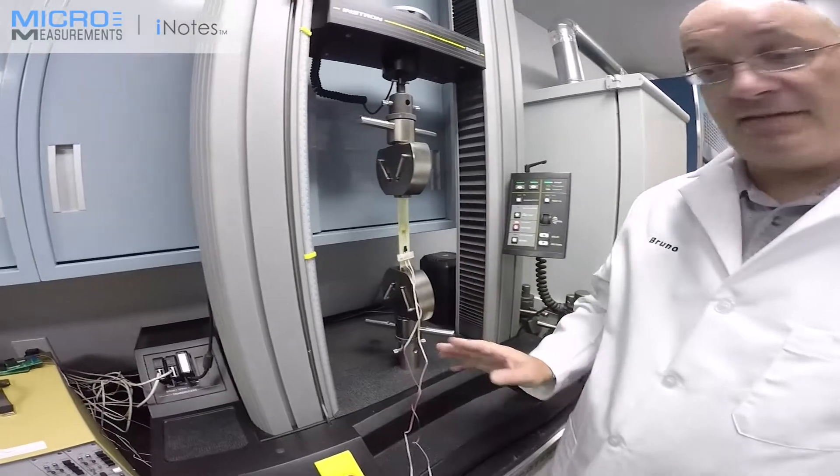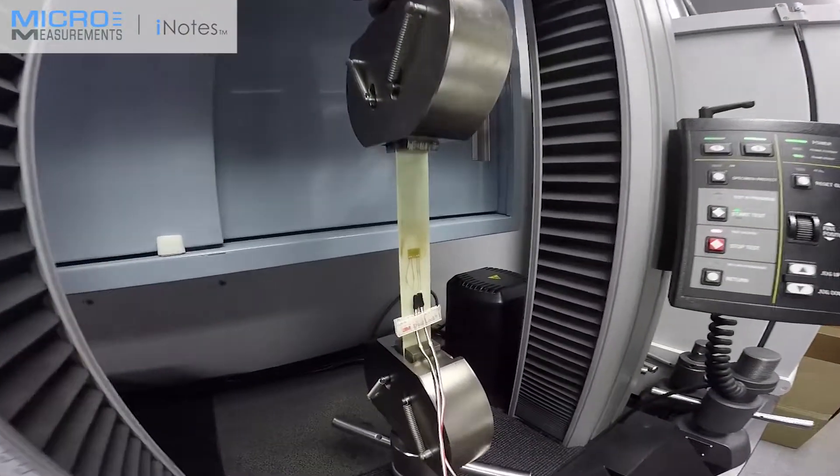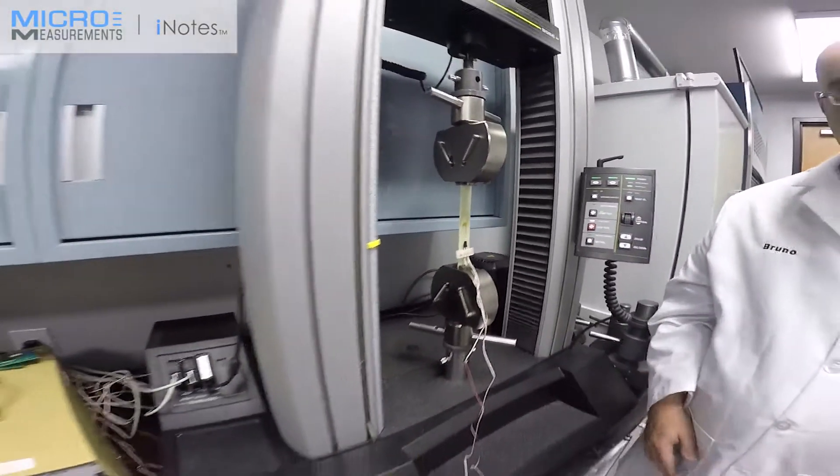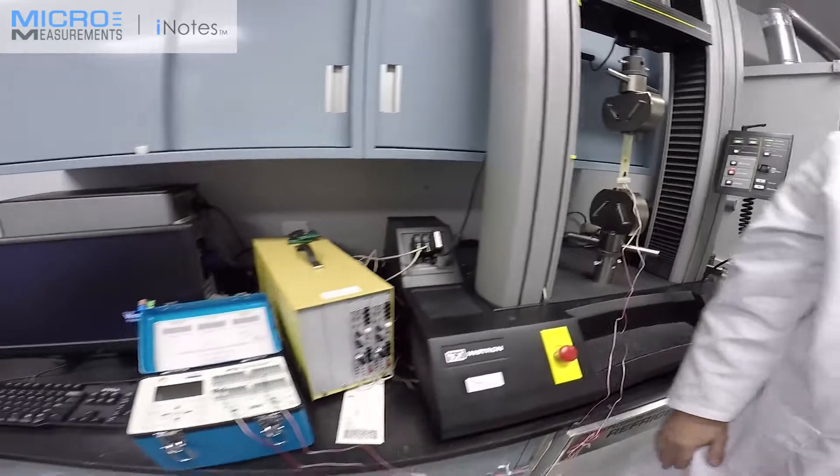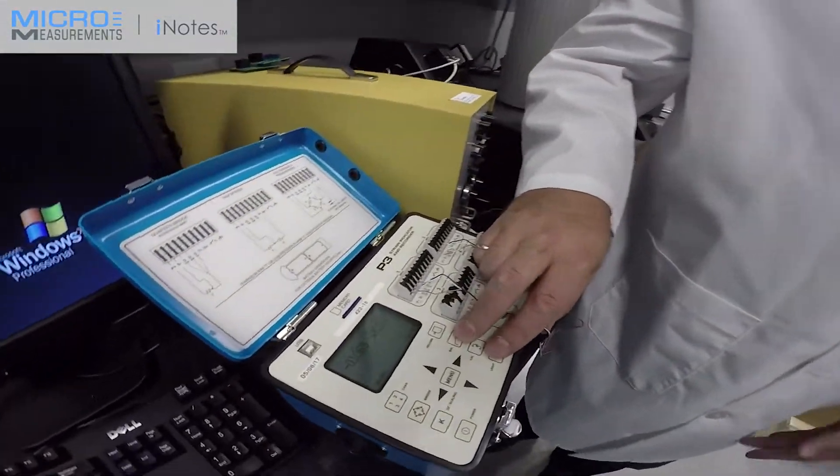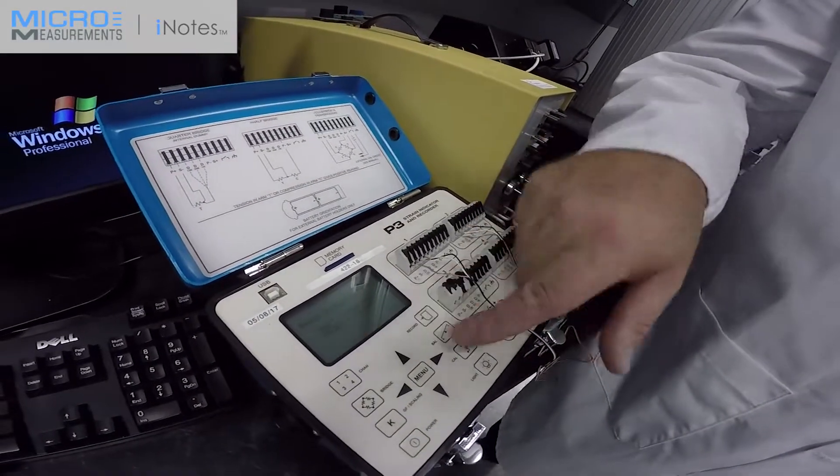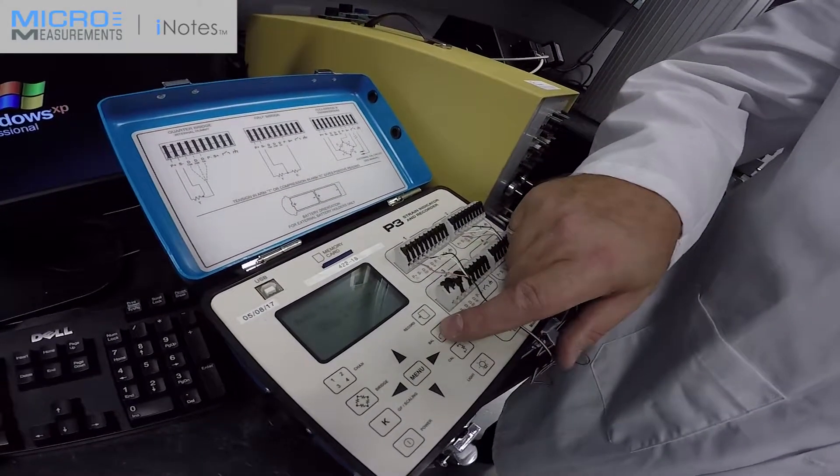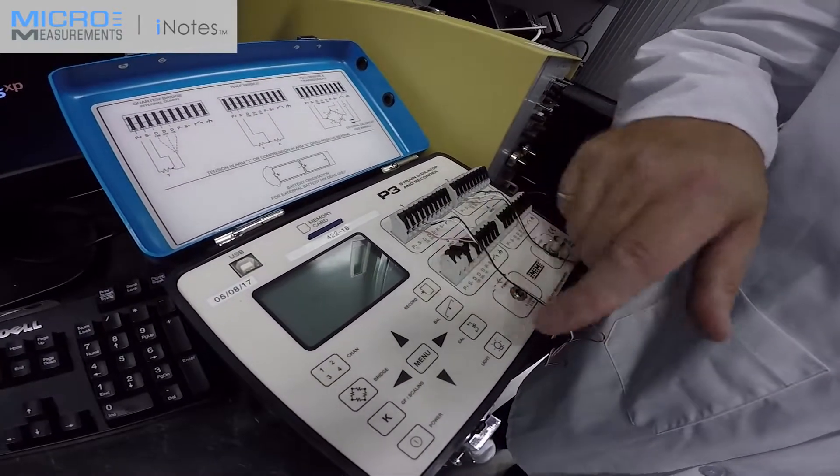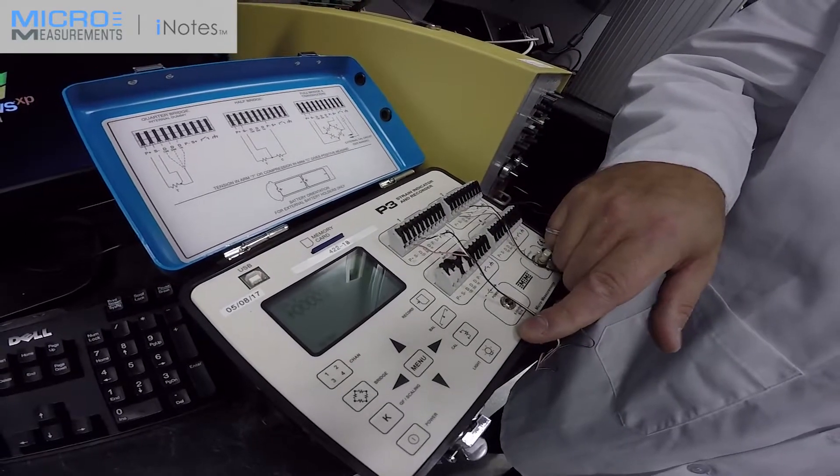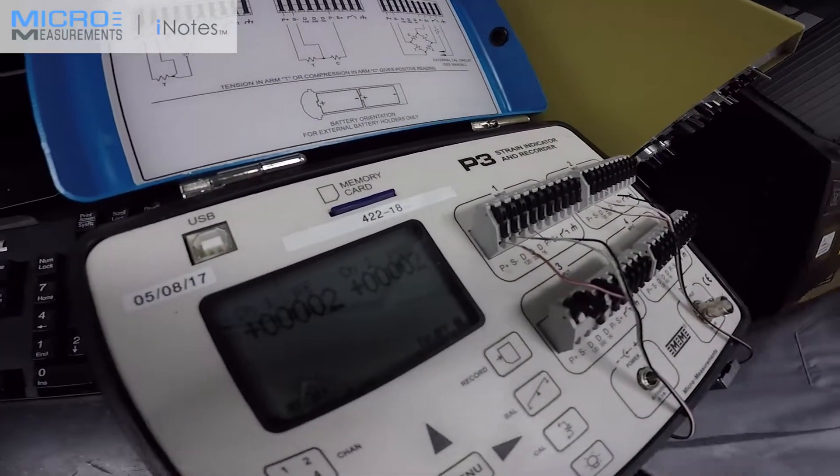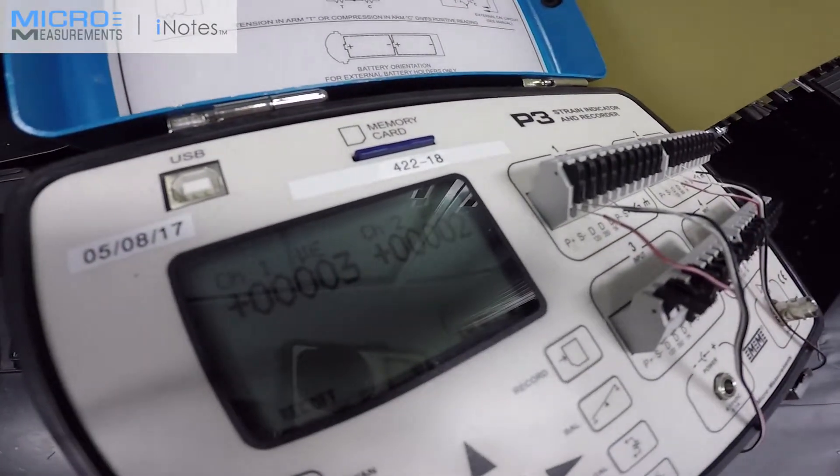When this is done, basically the only thing we have to do at this point is to zero the P3 box, the offsets created from the installation and also the natural offset of the gauge being installed. And to do that, we only have to, very simply, we push the balance button and the instrument asks us if we really want to balance it or not. We just go ahead and balance it. We can actually record this as the data, before we start the data. And if you look at the actual display now, we are dealing with one or two microstrain, basically after balance.